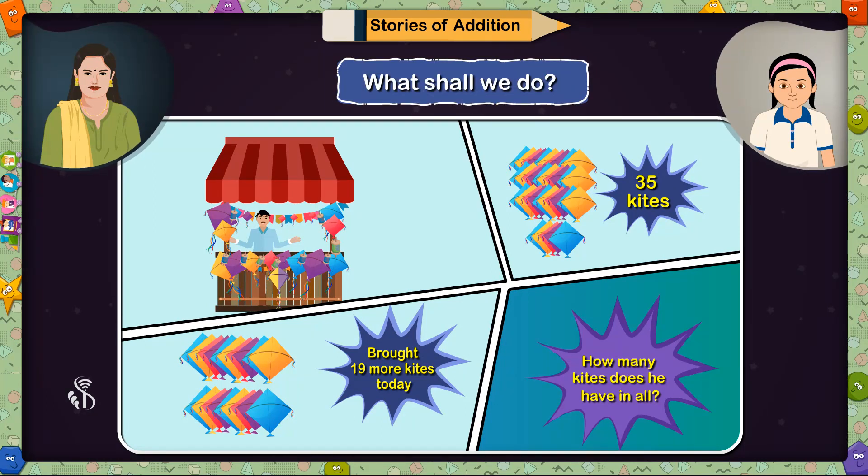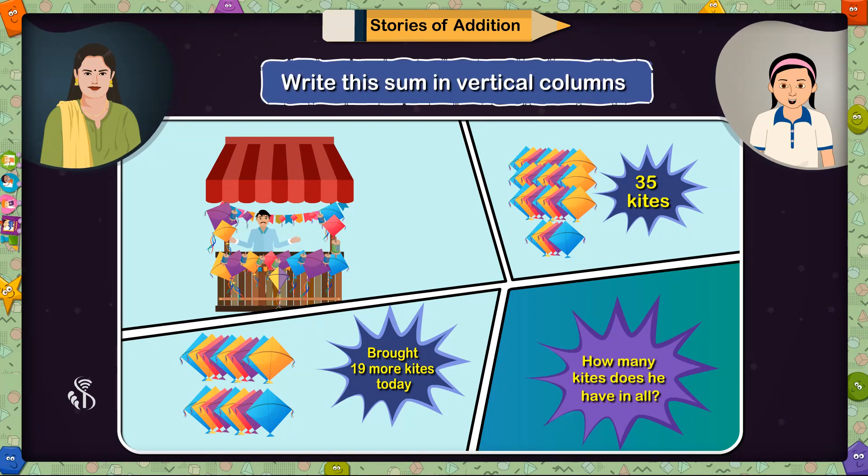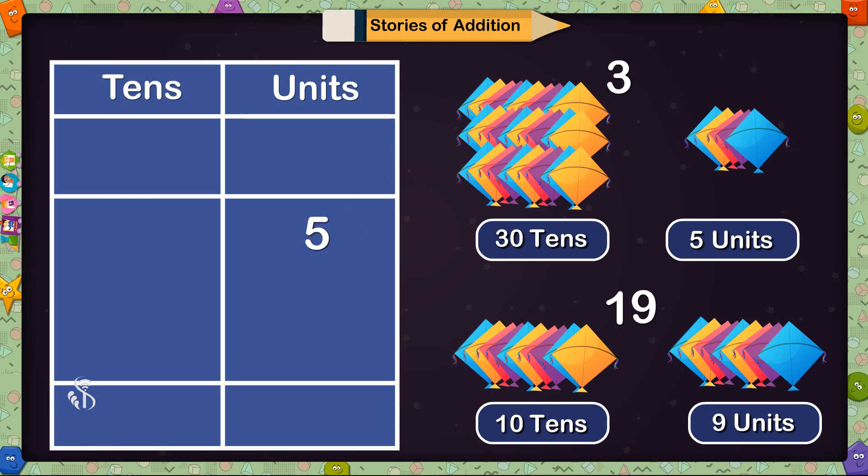Addition. Very good. Now do the addition please. Madam, first I will write this sum in vertical columns. From 35 I will write 5 in units place and 3 in tens place and from 19 I will write 9 in units place and 1 in tens place.